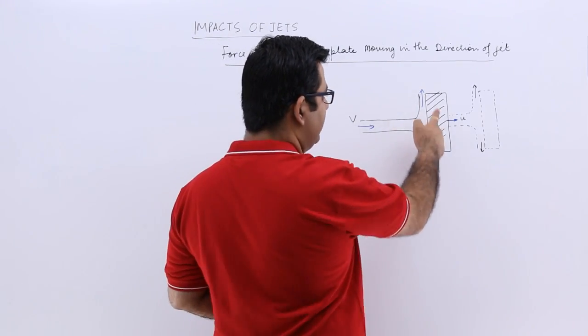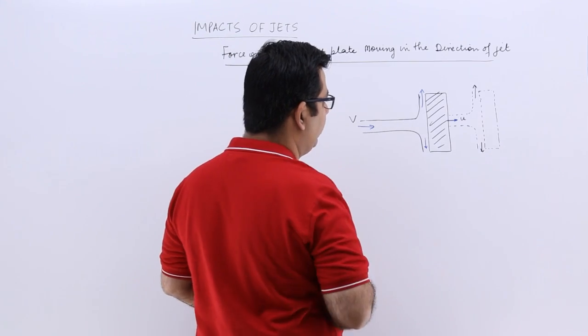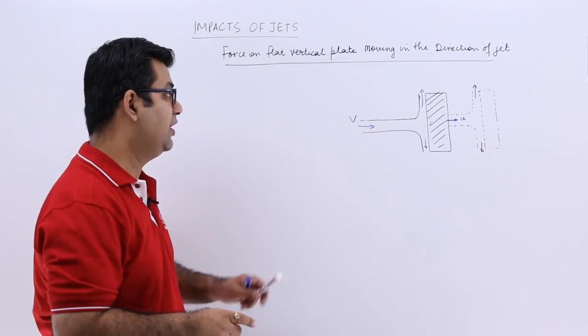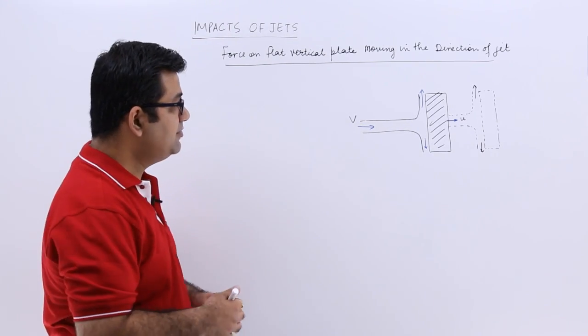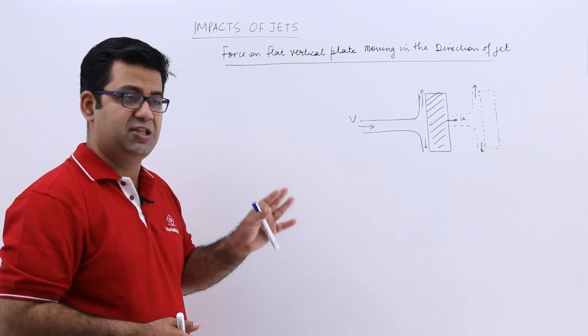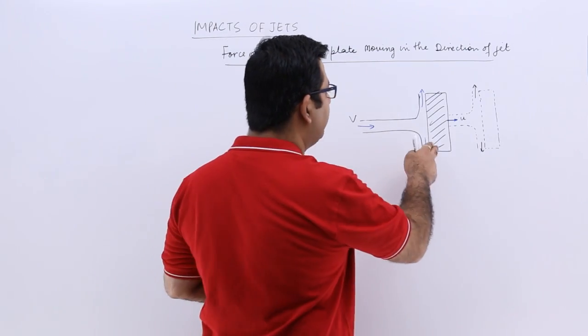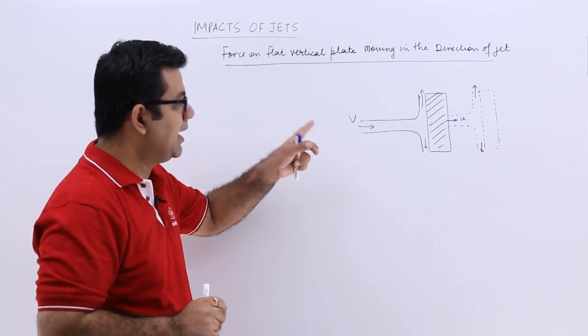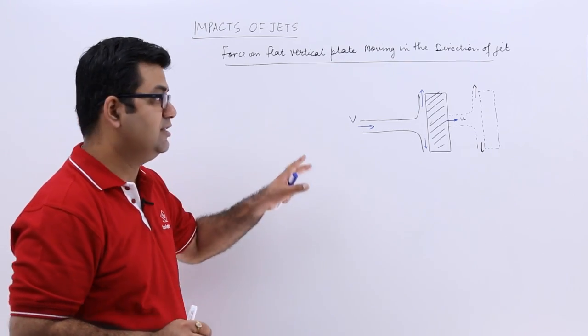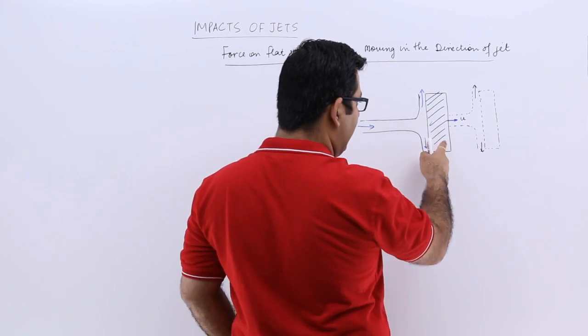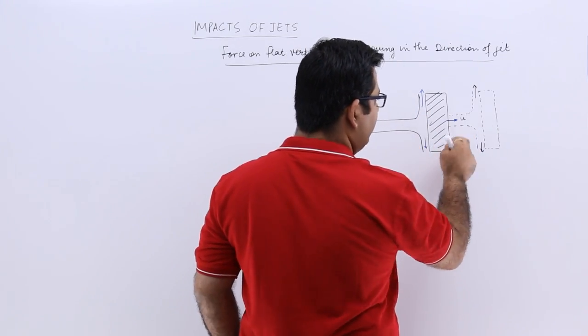So this is the flat plate on which a jet with velocity v is striking. Now in this particular case, the jet is not striking the plate with velocity v because v is the absolute velocity of the jet. But you have this plate which is moving in this direction with velocity u.